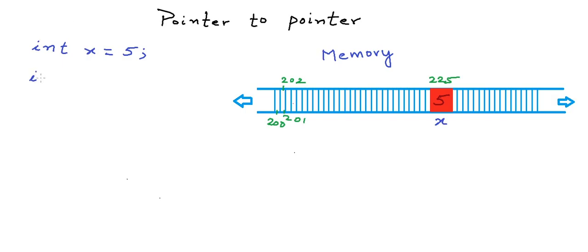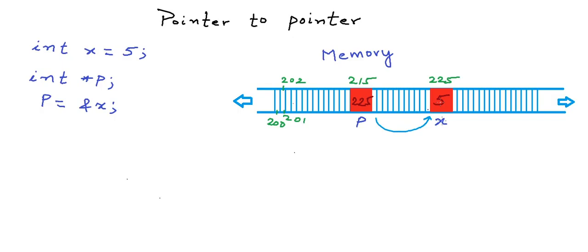Now I want to declare a pointer variable that will store the address of x. To store the address of an integer, we will have to declare a pointer to integer — we need to put an asterisk sign in front of the variable name. Some memory will be reserved for this variable p. In a typical architecture, a pointer is also stored in 4 bytes. So let us say we get a block of 4 bytes at address 215 for p. Now I write a statement p = &x to fill in the address of x in p — and that's how p points to x. The ampersand operator gives us the address of a variable.